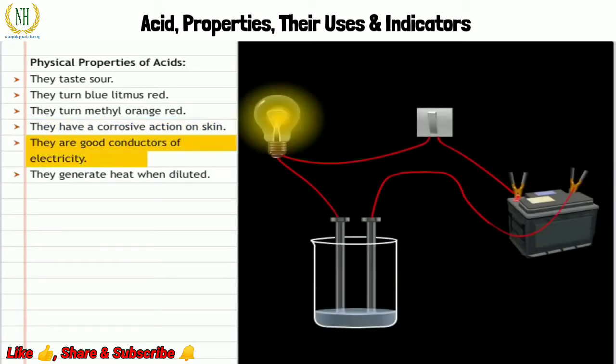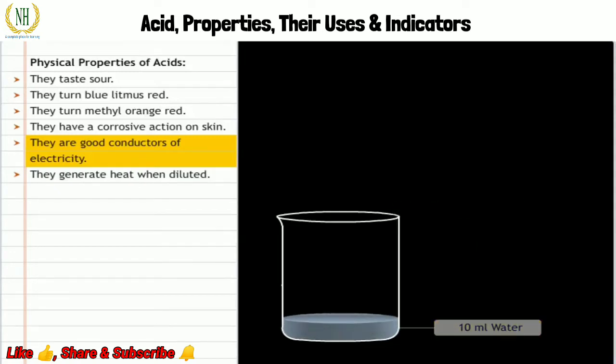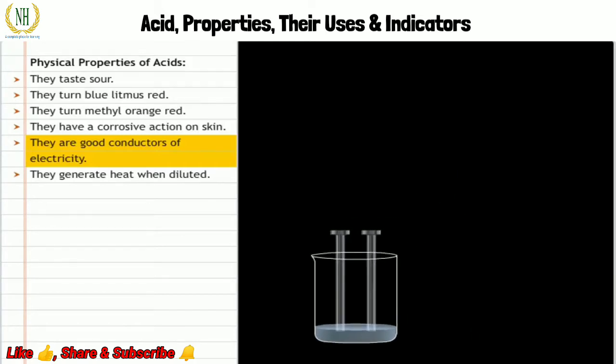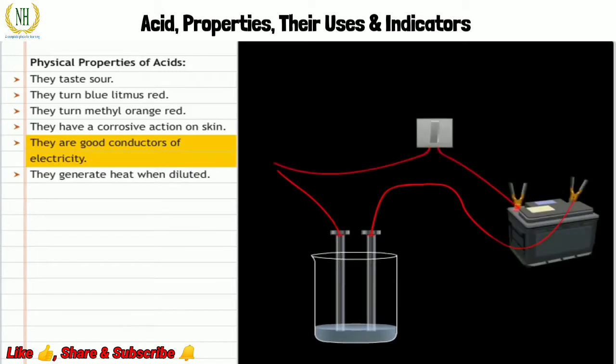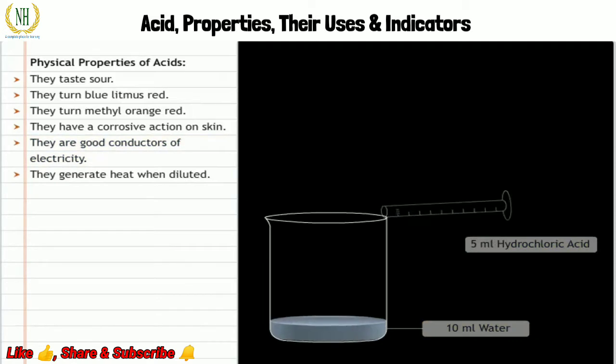Acids are good conductors of electricity. Let's try to prove this through an experiment. Pour 5 ml of hydrochloric acid into a beaker containing 10 ml of water. Suspend two carbon rods in the acid. Connect the rods with an electrical wire in series along with a battery, a switch, and a bulb. Switch the setup on and see the bulb glow. This shows that acids are good conductors of electricity.